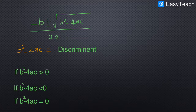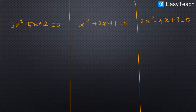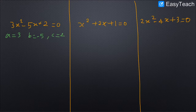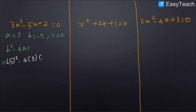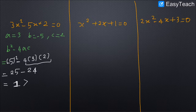The first condition is: if b²-4ac is greater than 0. Let me explain through an example: 3x²-5x+2=0. Here a=3, b=-5, c=2. The discriminant b²-4ac = (-5)² - 4×3×2 = 25 - 24 = 1, which is greater than 0.